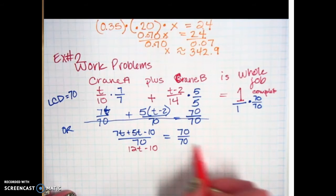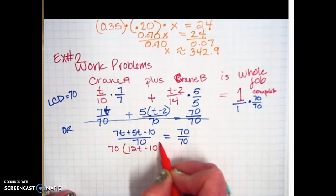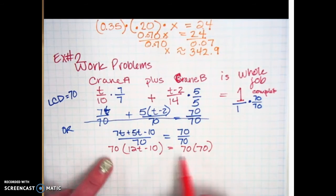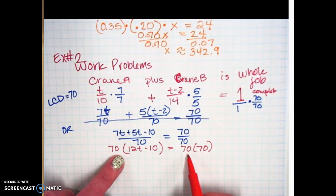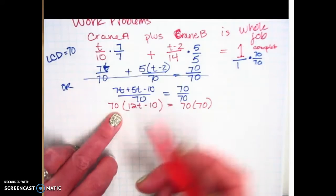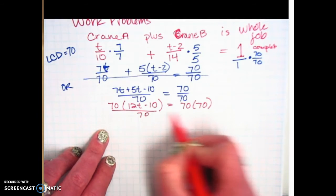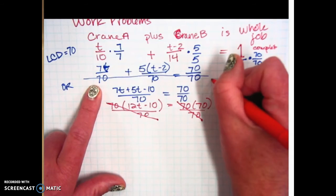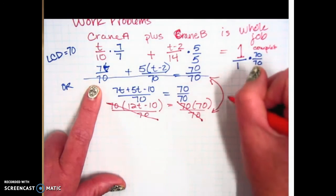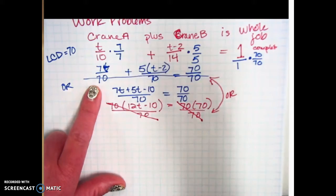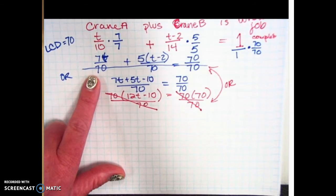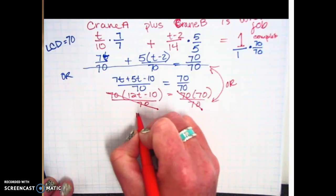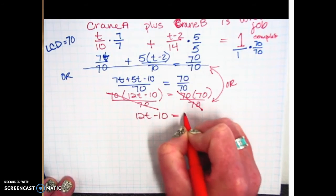So you'd have 7T plus 5T minus 10 over 70, set it equal to 70 over 70. And then when you do the cross product, they'll cancel there. Either way is going to end up working. So 7T plus 5T is 12T. So 12T minus 10. If you do the cross product here, you end up multiplying it by 70. And then you have 70 times 70. And so once you have factors of 70 on both sides, you can divide both sides by 70. So they cancel. Or you can do it up here. It just depends on what you prefer. It's like a preference kind of thing. That leaves us with 12T minus 10 equal to 70.